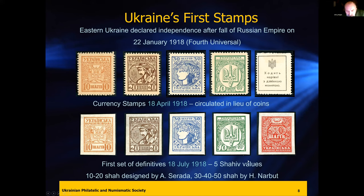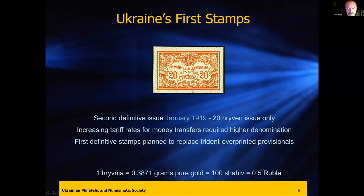Hryhorii Narbut designed many of the stamps in Ukraine, many of the banknotes, a lot of the alphabet designs and legal documents — he was a very profound graphic artist. The second definitive stamp came out when higher denominations were needed as tariff rates for money transfers started rising. And eventually they were thinking of reusing these definitives to replace the provisional stamps.